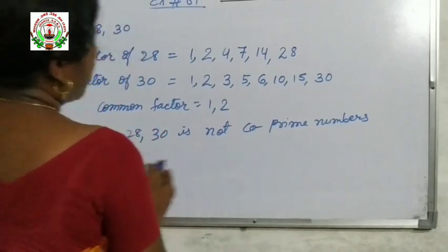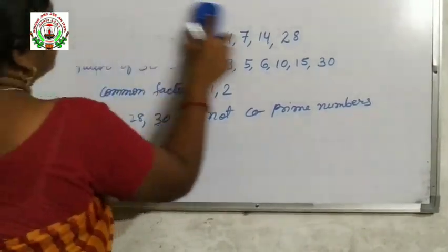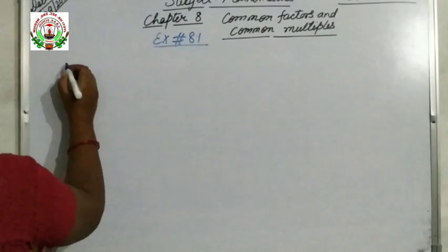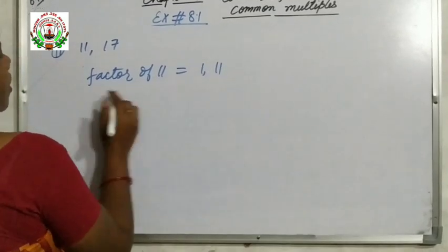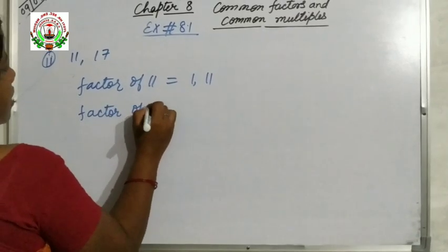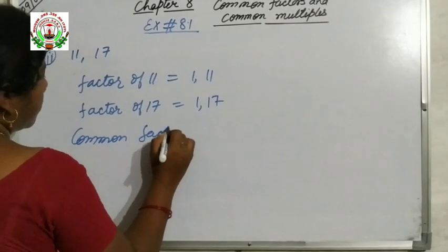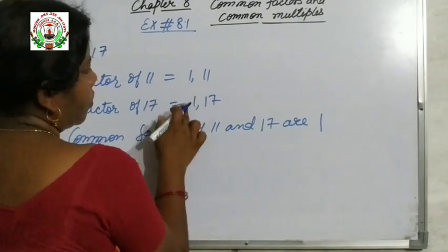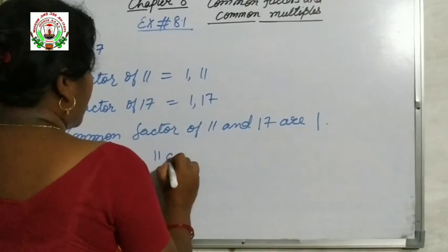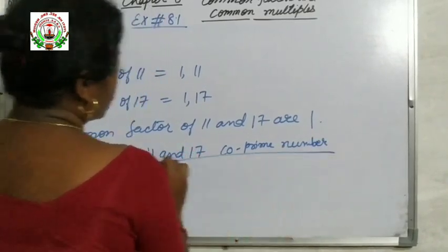Children, always keep in mind: co-prime numbers have only 1 as their common factor. Now the next is question number 2: 11 and 17. Factors of 11 are 1 and 11, and factors of 17 are 1 and 17. So the common factor of 11 and 17 is only 1, which is common in both. Therefore, 11 and 17 are co-prime numbers.